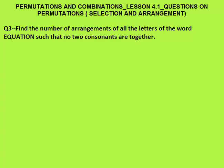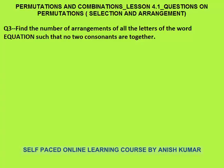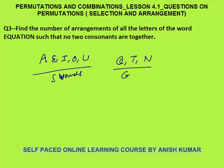Third question: find the number of arrangements of all the letters of the word EQUATION such that no 2 consonants are together. In this word, all 5 vowels A, E, I, O, U are present. The consonants are Q, T, and N — these 3 are the consonants. Since consonants should not be together, we use the same method as the previous questions. First we will arrange the vowels.